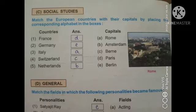Now let us go to our next page, that is C Section, Social Studies. Match the European countries with their capitals by placing the corresponding alphabet in the box. Countries are given on one side and capitals on the other. First one, France — answer: Paris. Second one, Germany — answer E, Berlin. Third one, Italy — answer A, Rome. Fourth one, Switzerland — answer C, Berne. Fifth one, Netherlands — answer B, Amsterdam.